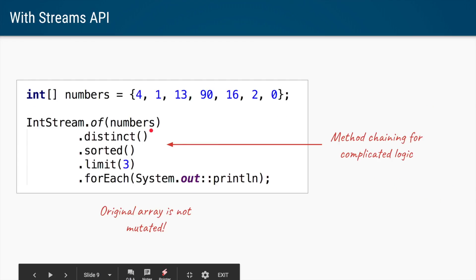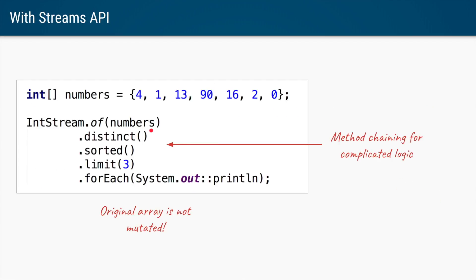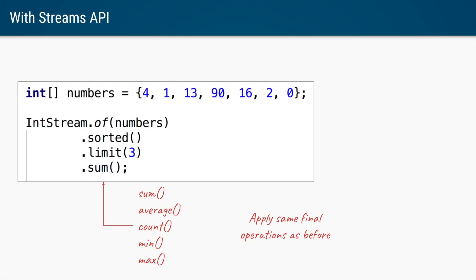Using Java 8 IntStream we can do this in a much simpler manner. You say IntStream.of(numbers), call distinct() to get only unique numbers, sorted() to sort them, limit(3) to take only the first three, and forEach to perform an operation — in this case printing to console. Even though you call sorted on the IntStream, the original array is not mutated; it internally creates a copy. After these intermediate operations you can still call sum, average, count, min, and max.